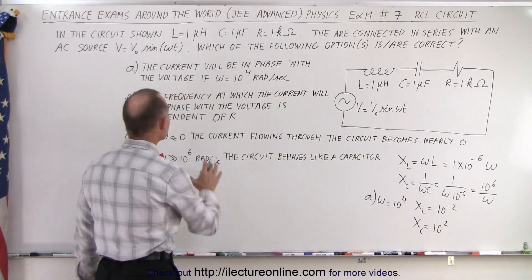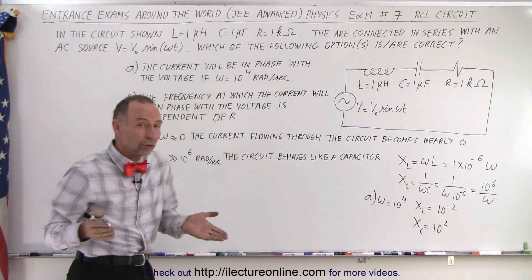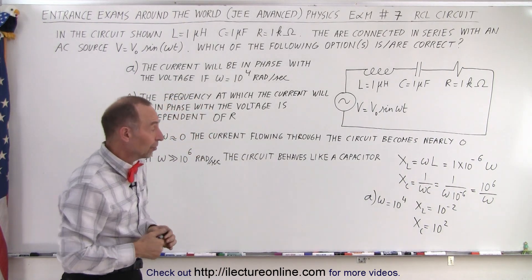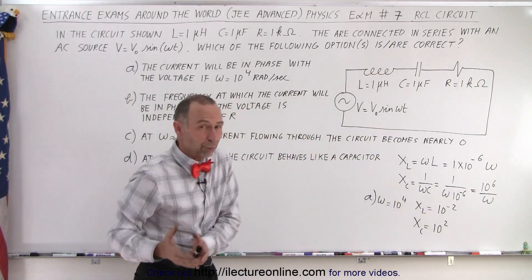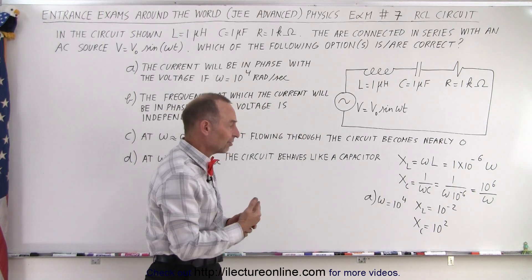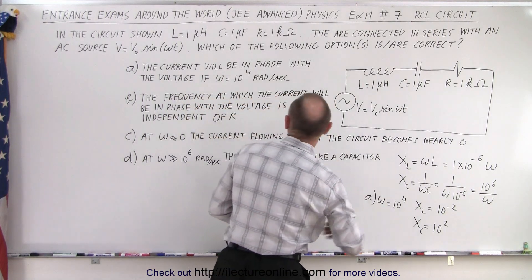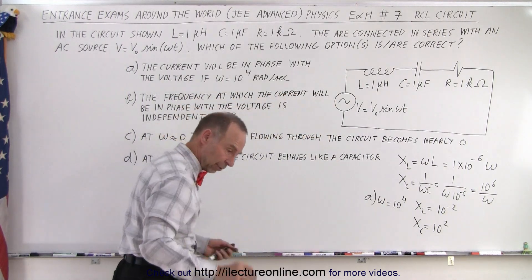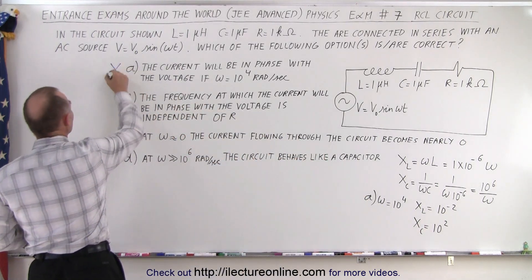For the current to be in phase with the voltage, the net reactance should be zero. But when you add these together, they do not cancel each other out because one is in one direction and one is in the other. X_C is far greater than X_L, so at omega equals 10^4, they would not cancel out. Therefore, A is not a correct statement.